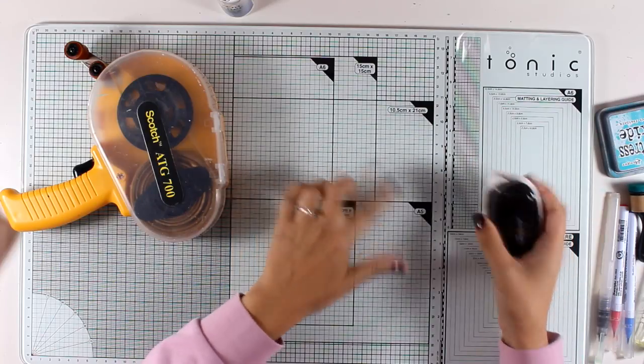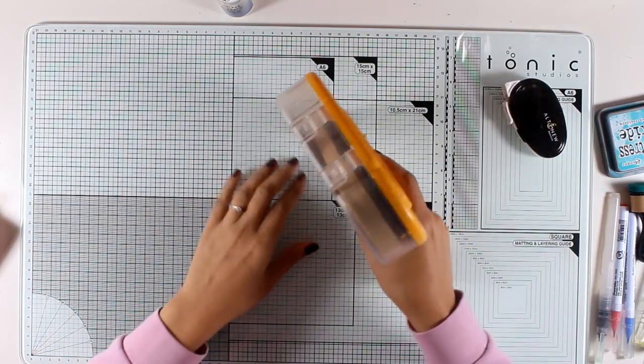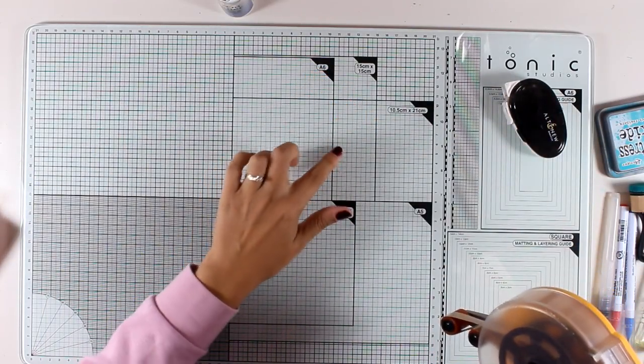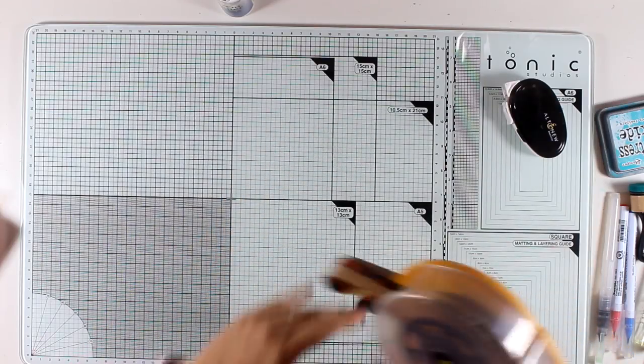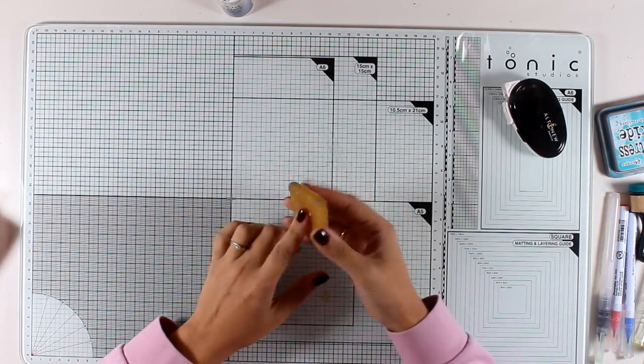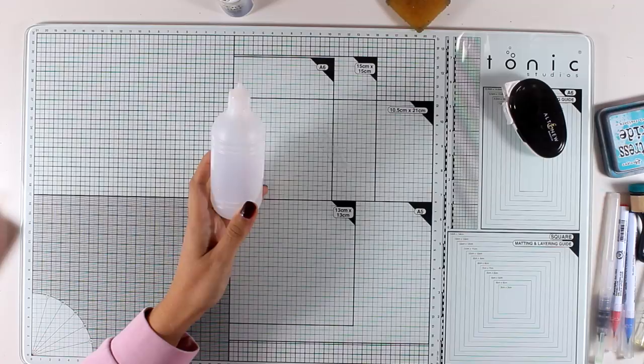The number one thing I love about the glass mat is that you can apply tape adhesive on top of it and it's really easy to remove. You can remove it with an adhesive eraser or again with your isopropyl alcohol.